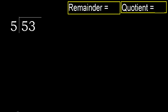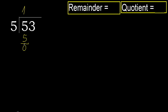53 divided by 5. 5 is not less, therefore we work with 5. 5 multiplied by which number is nearest to 5 but not greater? 5 multiplied by 2 is 10 — that is greater. Multiplied by 1 is 5, which is not greater. 5 minus 5 is 0.